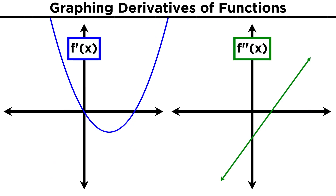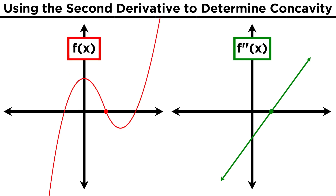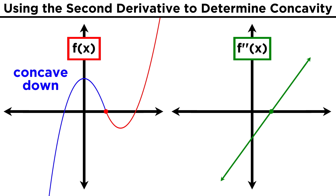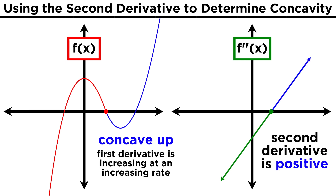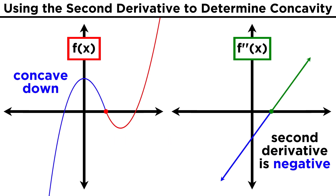Everything we just said also applies to a comparison of the second derivative and first derivative, but we can even look at the second derivative to get information about the original function. Let's consider the notion of concavity. A section of a curve is concave upward if every point on it sits above its tangent line — we can think of this as a curve that opens upward. A section of a curve is concave downward if every point on it sits below its tangent line. Intervals on a second derivative that are positive correspond with intervals on a function that are concave up, and intervals that are negative correspond with intervals that are concave down.